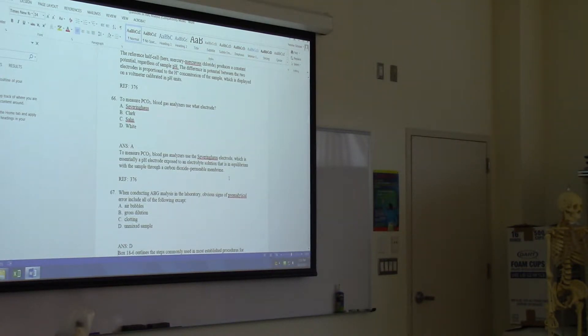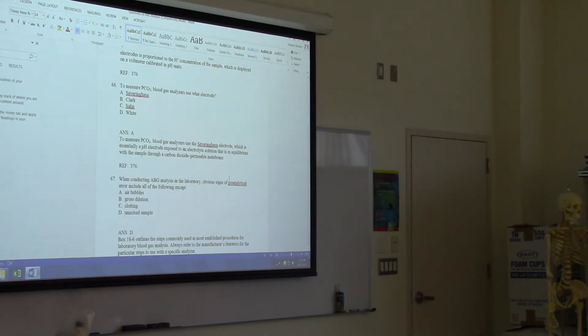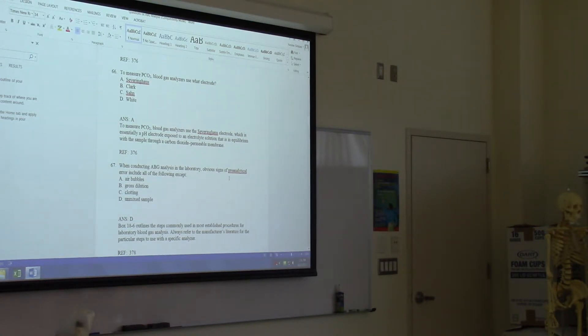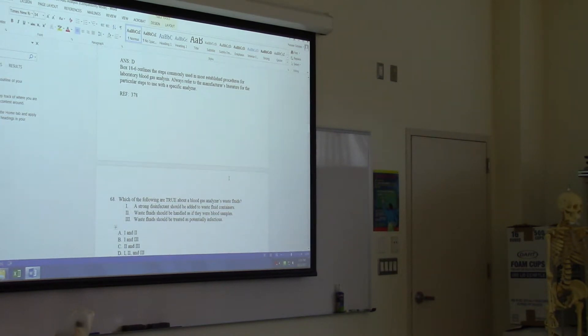It says refer to the manufacturer's literature. Which of the following are true about a blood gas analyzer's waste from the patient's? A strong disinfectant should be added to the waste fluid containers. Waste fluids should be handled as if they were blood samples. Waste fluids should be treated as potentially infectious. All of them, D.